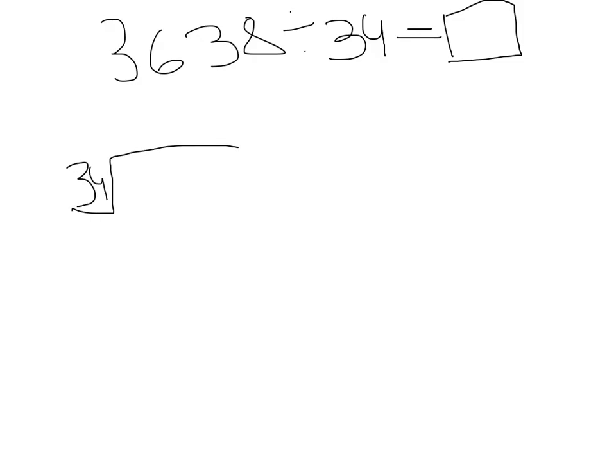Solving the problem: 3638 has to be divided into groups of 34, which will equal some unknown number. In my working, I wrote out the numbers using the partial quotients method, which is what I'm going to use to solve the problem.